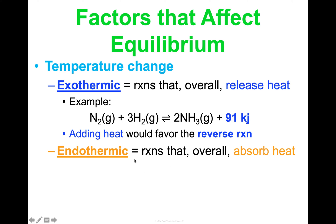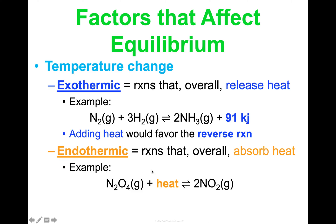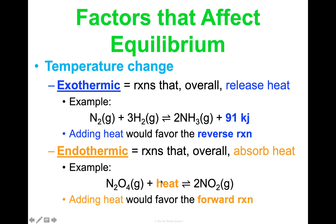Endothermic reactions are different — these reactions overall absorb heat, they take in heat. You'd see the reaction written where heat must be added as a reactant. For example, dinitrogen tetroxide reacts — we have to add heat to make this happen — and then it forms nitrogen dioxide. In this situation, if I add heat it would favor the forward reaction; if I remove heat it would favor the reverse reaction. You're doing the same thing as with concentration, just referring to heat or temperature change to make your predictions according to Le Chatelier's principle.